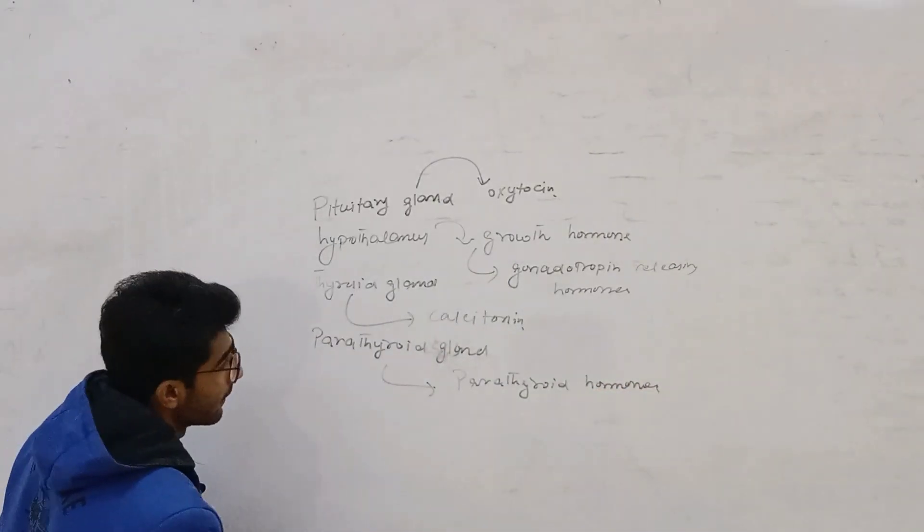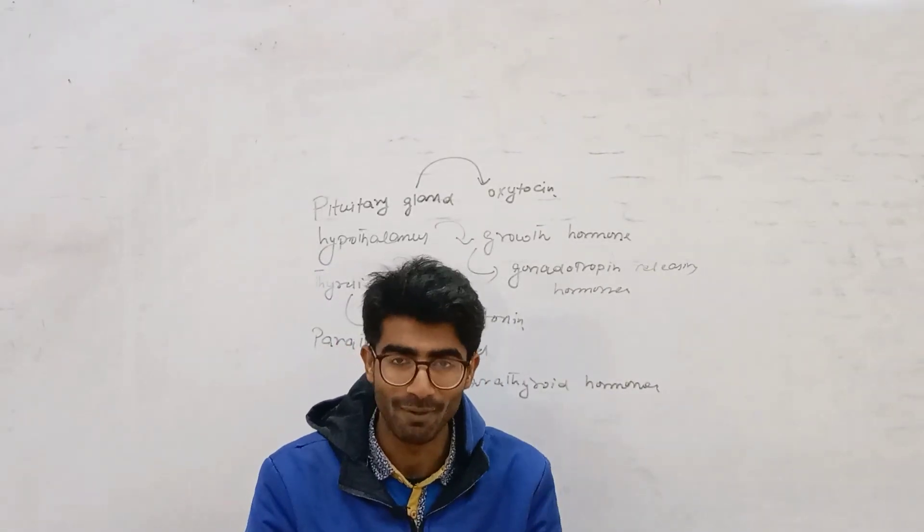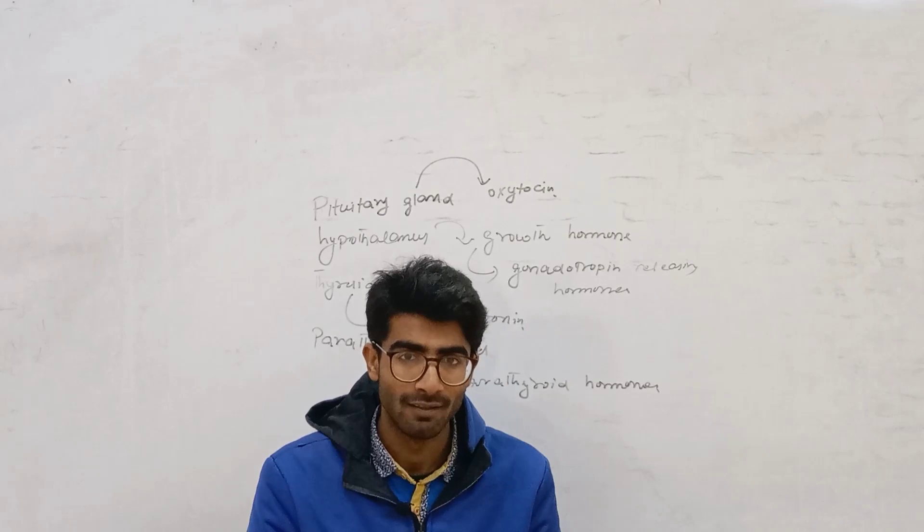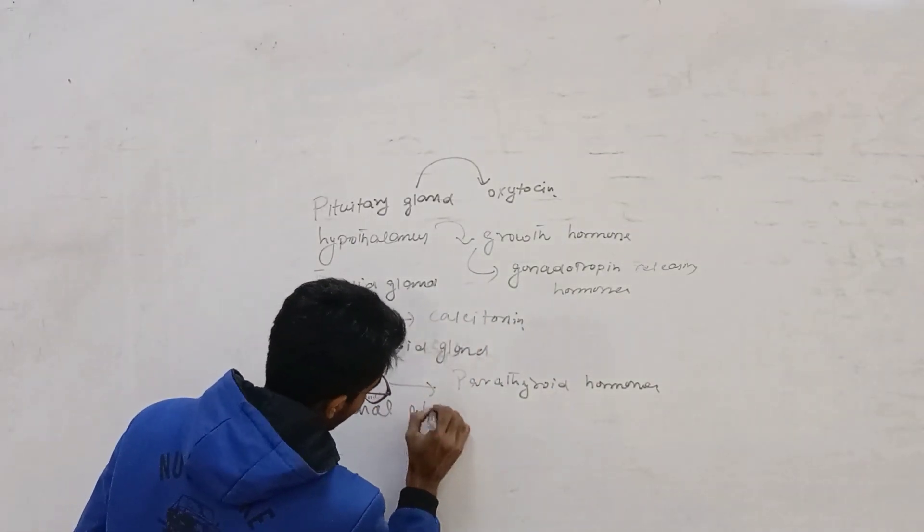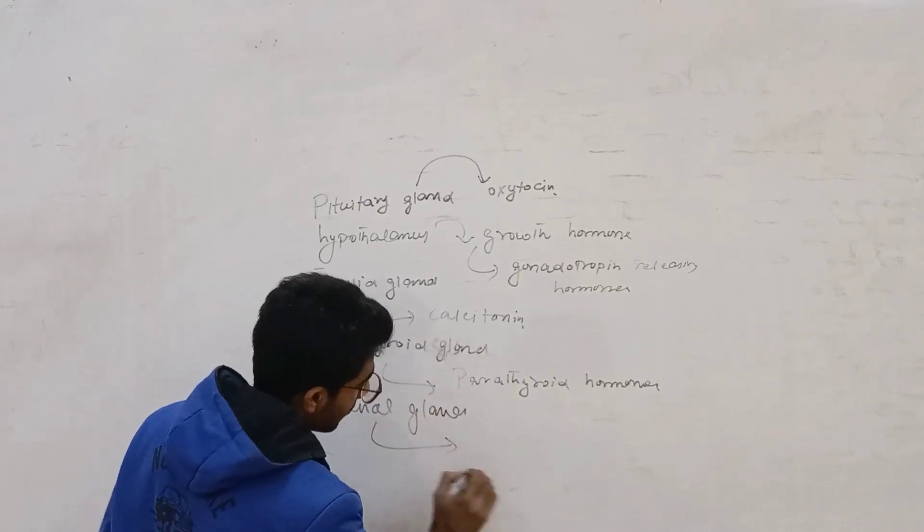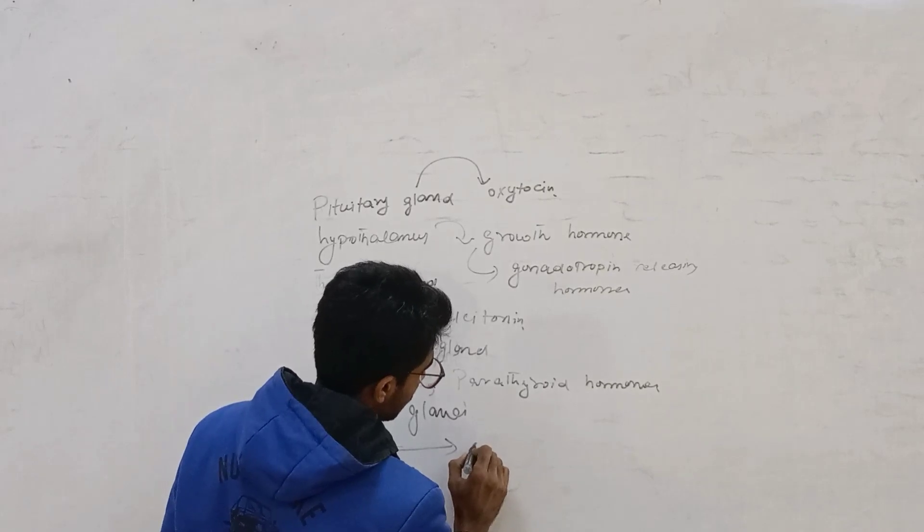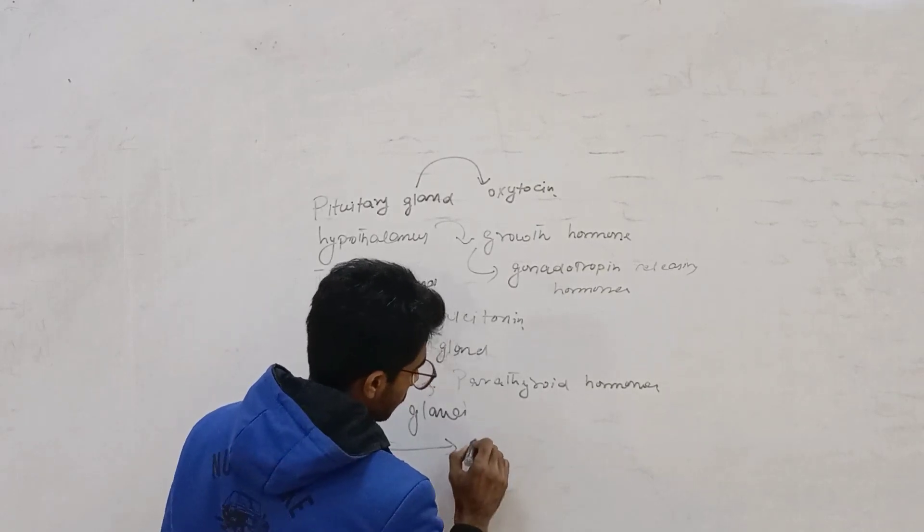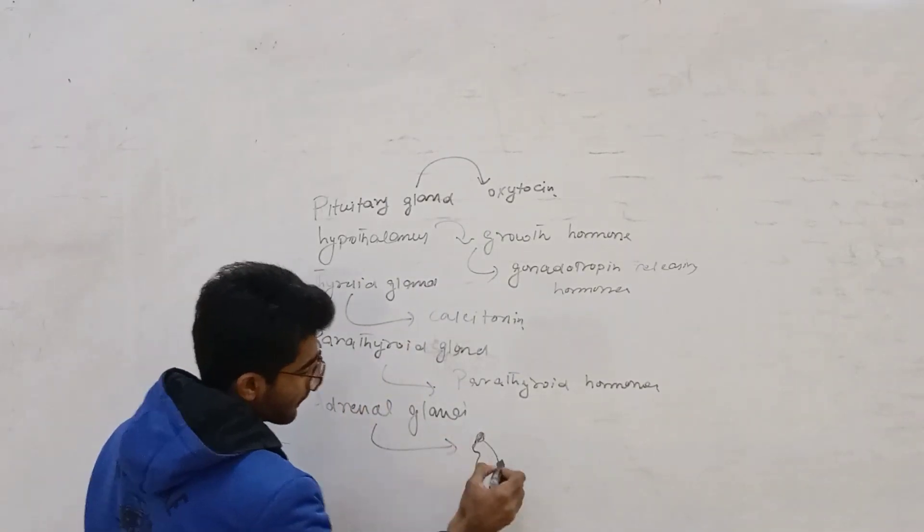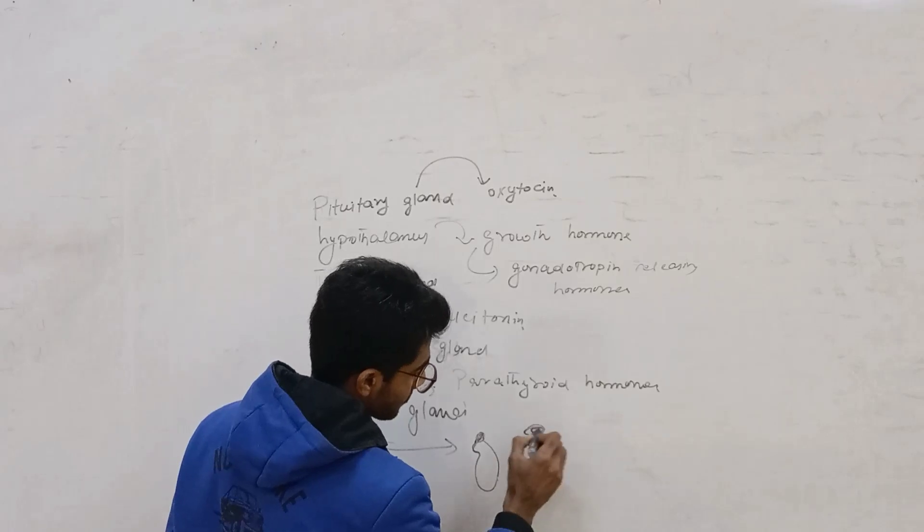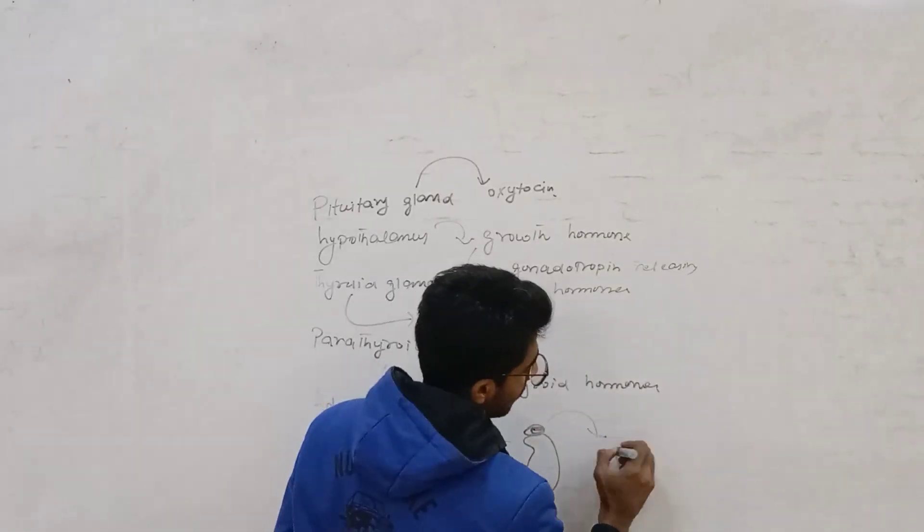The adrenal gland - the most common gland that people know, everyone knows about it. These glands are present in the kidney and release aldosterone hormone and cortisol hormone.